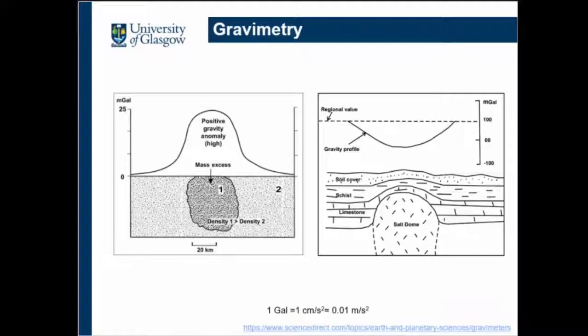Another example is in the case of hydrocarbons. Hydrocarbons are pockets of organic gases, and many times oil as well. They are often covered by salt domes, which are hollowed-out structures. So if you take a gravity gradient across the salt dome, you will see a negative density anomaly in your gravity profile. It is very important in oil and gas exploration as well.